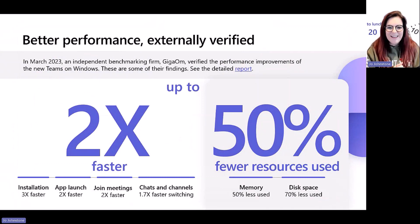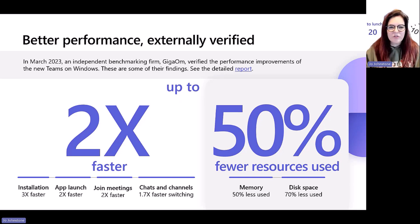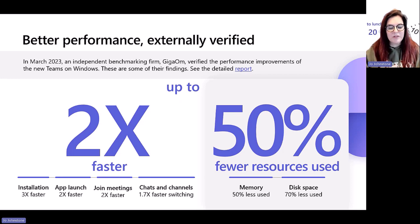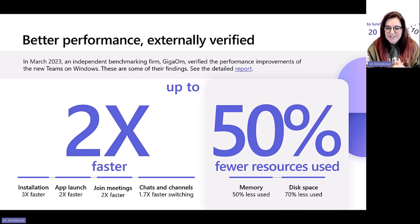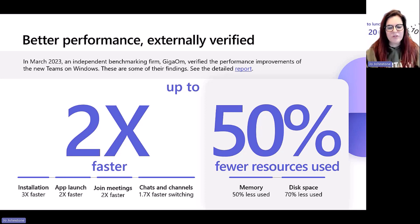But how do we know it's twice as fast? We've partnered with an independent benchmarking company called GigaOm, and they tested the performance of new versus classic Teams across three different laptop ranges: low end, general purpose, and high performance. They conducted various tests comparing installation behavior, application response, and resource impact such as memory and disk space. Our engineering prioritized the user interactions that occur most frequently — including switching between chats, channels, and activities — because a typical user performs 10,000 switches per month.